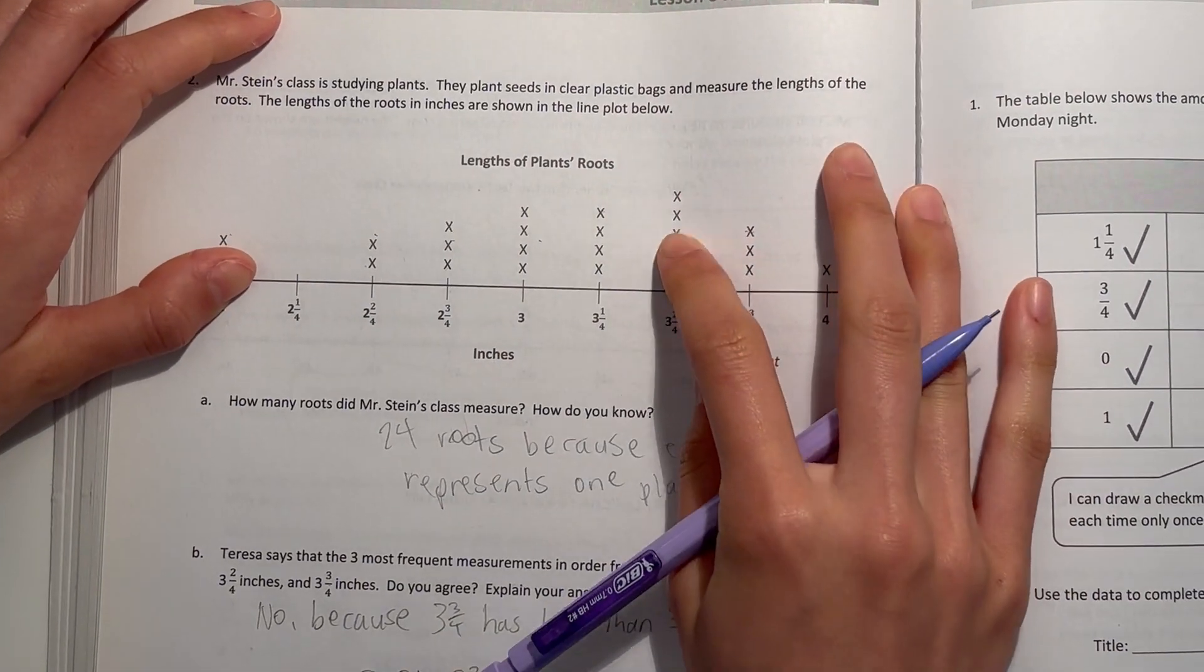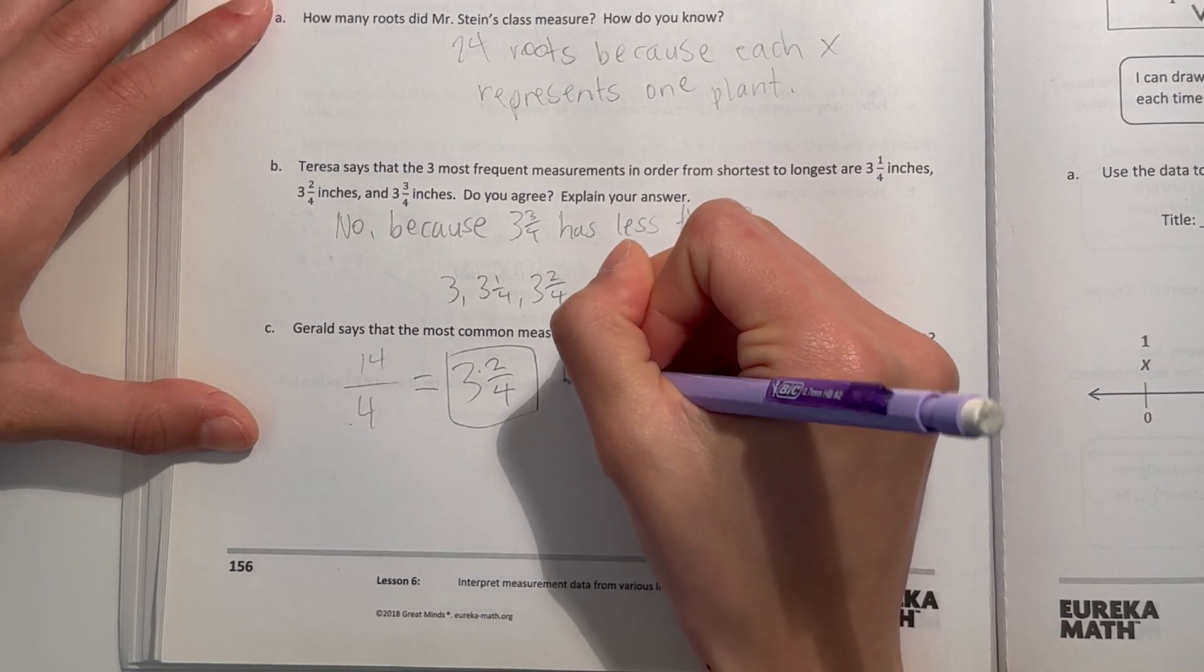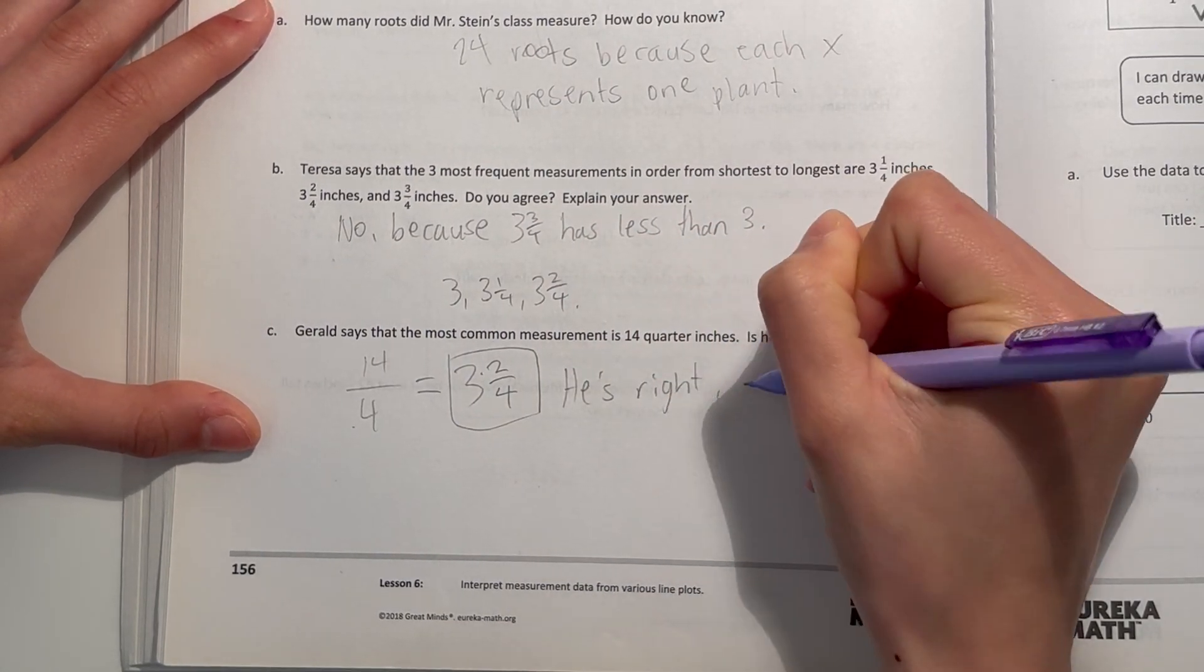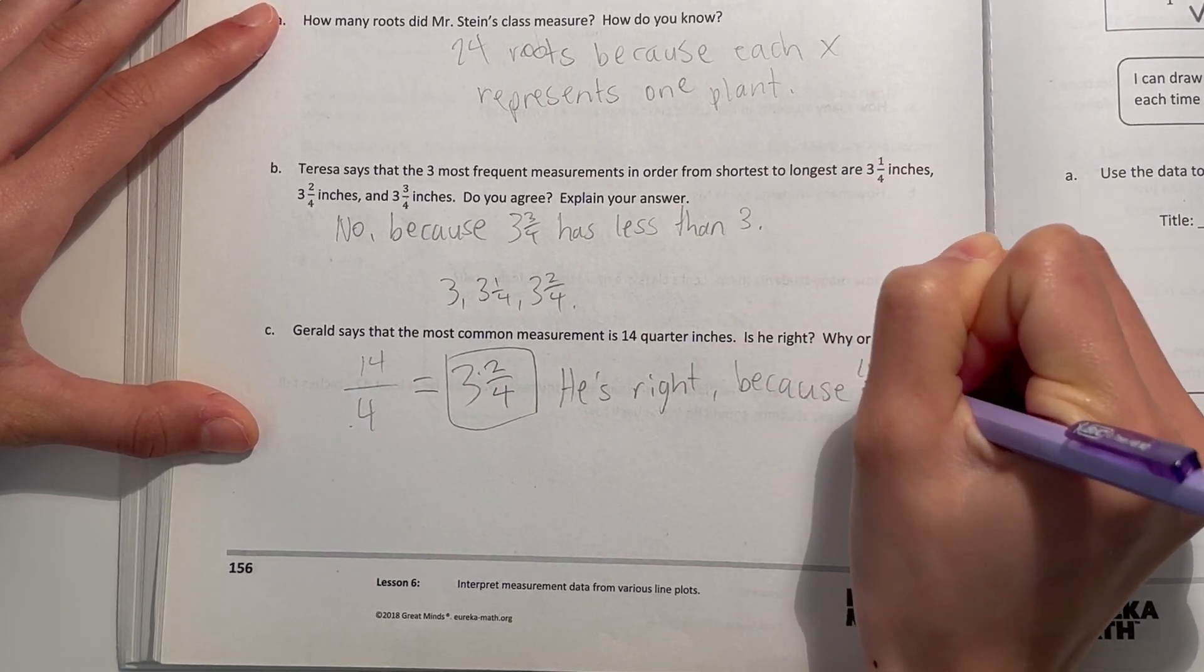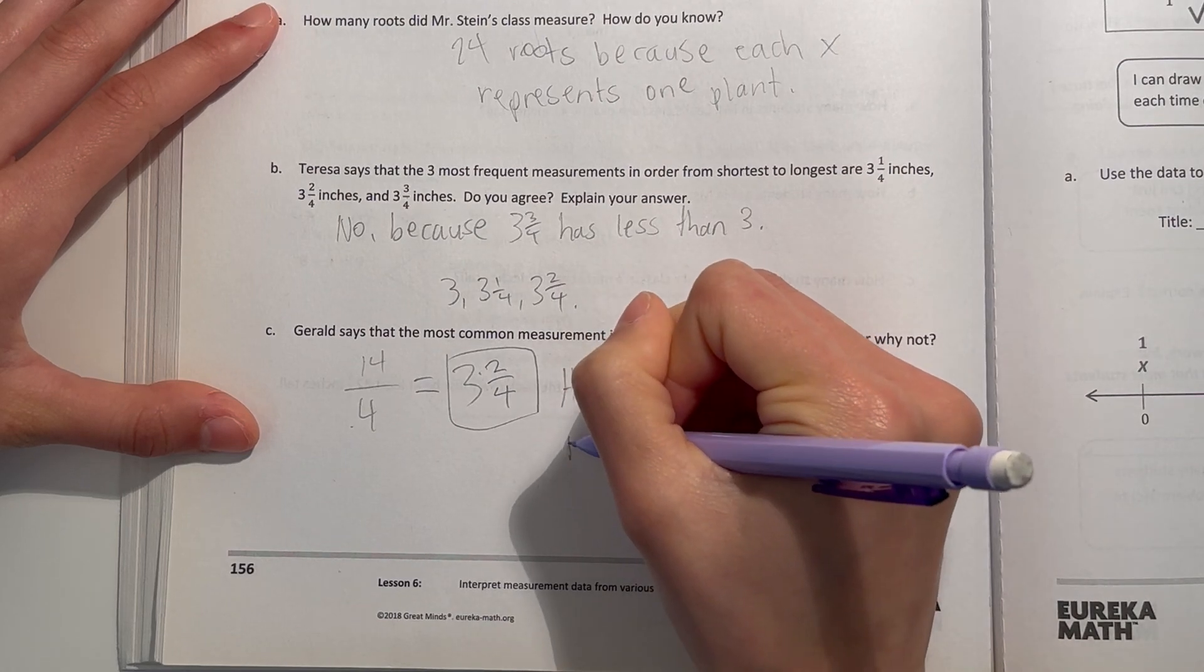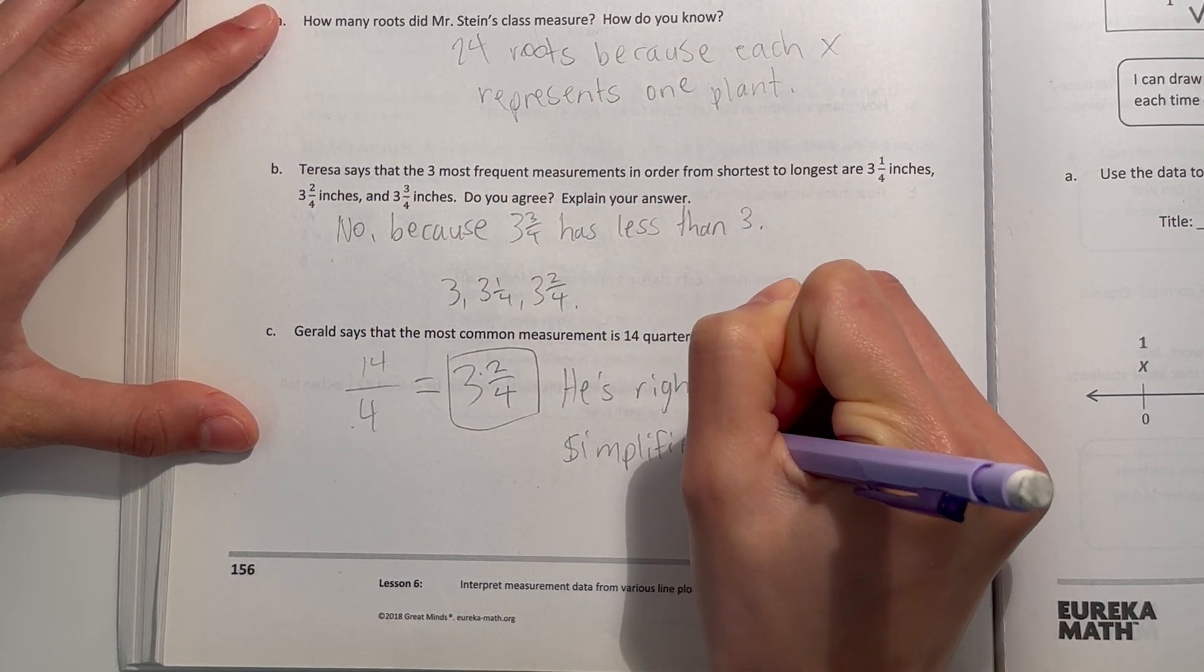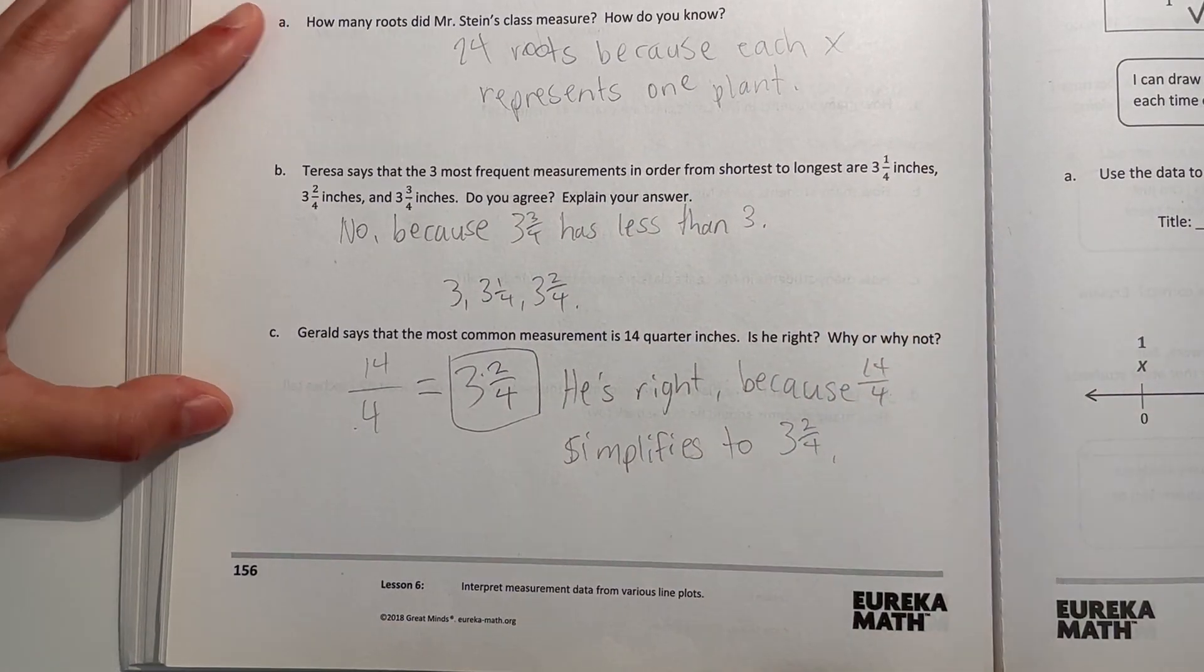And look at that, it's the most common measurement. So he's right because 14 fourths simplifies to 3 and 2 fourths. So yeah.